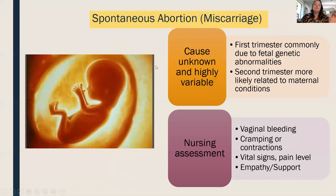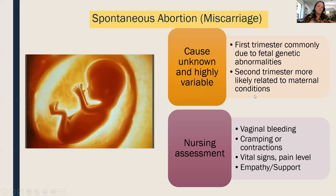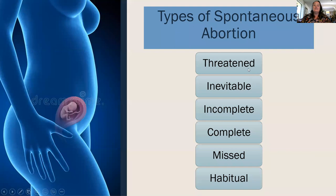Spontaneous abortion — what we call miscarriage when talking to patients — in the first trimester is commonly due to genetic abnormalities, though we don't always know the cause. Second trimester losses are more likely related to maternal conditions. The number one sign is cramping, contractions, and vaginal bleeding. Our role is to maintain homeostasis for the mother and provide empathy and support, often collaborating with social services or a grief team. There are several types of spontaneous abortion worth knowing for NCLEX.